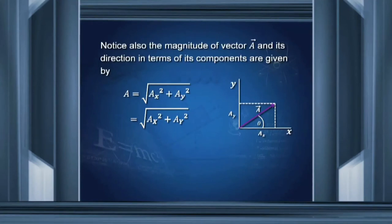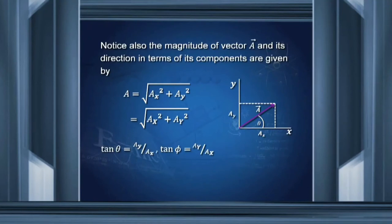Now let us reverse the process. Given a_x and a_y, how do you find vector a? Simple geometry tells you that the magnitude of vector a is the square root of a_x squared plus a_y squared. The direction is given by tan theta equal to a_y divided by a_x. So given components, you can recover the vector's magnitude and direction.